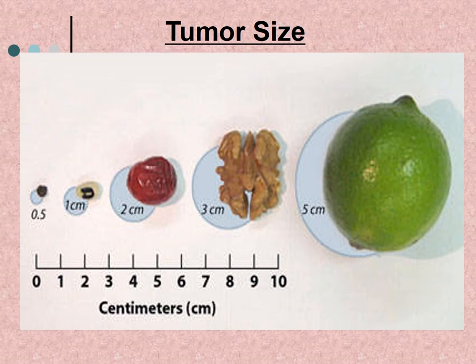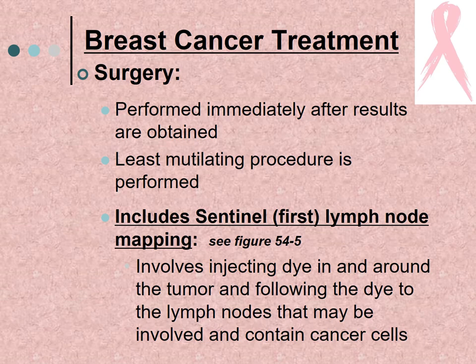This shows the sizing of tumors. When a tumor is 5 centimeters or larger, that is about the size of a lime — a pretty large tumor. If treated with surgery, it is performed immediately after results are obtained, using the least mutilating procedure possible to still control the cancer.